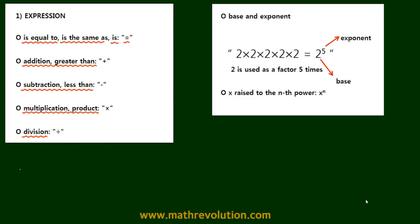Say we have a sentence that says: 'x is 5 greater than y.' If we translate this into an equation, it becomes x equals 5 plus y. 'Is' became the equal sign, and 'greater' became the plus sign.